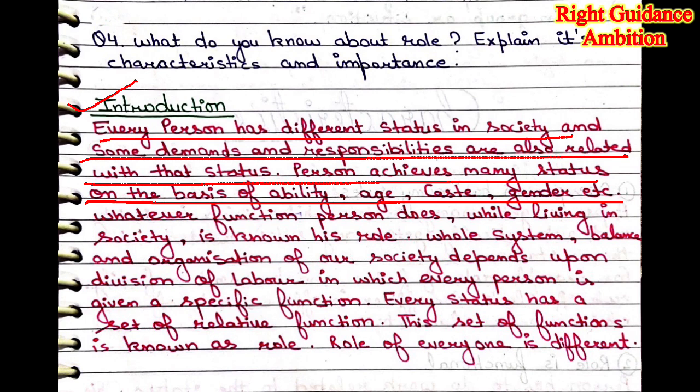First of all, introduction. Every person has a different status in society, and some demands and responsibilities are also related with that status. According to that status, we perform. A person achieves many statuses on the basis of ability, age, caste, gender, etc. When you live in a society, we have many statuses. For example, one person is a father and a brother; they work in the office as a clerk or officer.